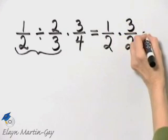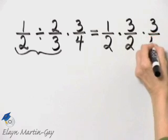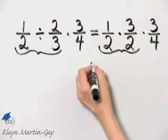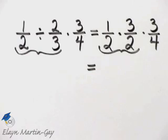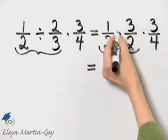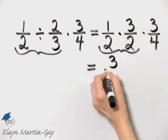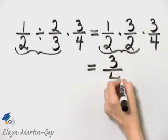And then of course it's times three-fourths. But again, I'm just concentrating on the first two fractions. And now, how do I multiply? Numerator times numerator, one times three is three, over two times two is four.